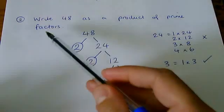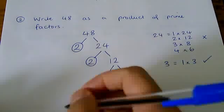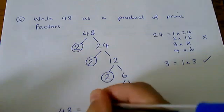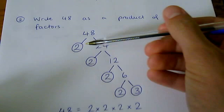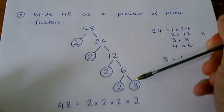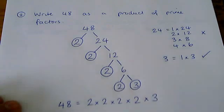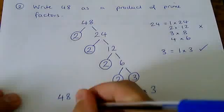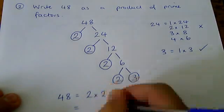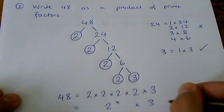Now, to answer the question, write 48 as a product of prime factors. We should write 48 equals 2 times 2 times 2 times 2. There they are, 1, 2, 3, 4 of them. And then there's a 3 which needs to be multiplied as well. And you could check this. If you do this multiplication, if you work out this product, you will get 48. 2 times 2 is 4, times 2 is 8, times 2 is 16, times 3 makes 48. How do we write it using index form? Well, here I've got 2 times 2 times 2 times 2, which is 2 to the power of 4 times 3.